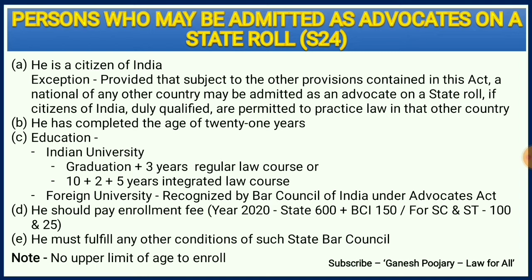The second requirement is that the person who wants to be admitted as an advocate on the state roll must have completed 21 years of age — that is the minimum age.